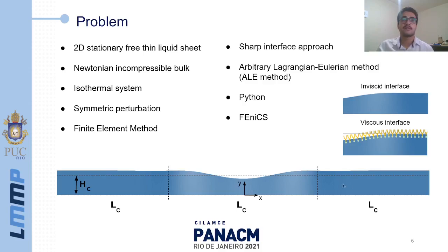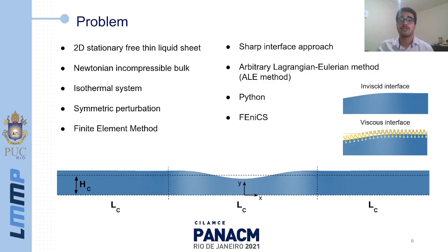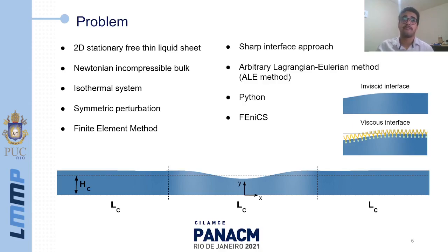Here we can see the domain of our model. We use the symmetry plane marked by the bottom dashed line to ease the computational cost, and we organize the workflow in two cases: an inviscid interface case and a viscous interface case. We represent the free surface using the sharp interface approach and use the finite element method to obtain approximate solutions for the velocity and pressure fields. We update the position of the interface through the Arbitrary Lagrangian-Eulerian method, or ALE method, and the algorithms are implemented in Python through the FEniCS library.